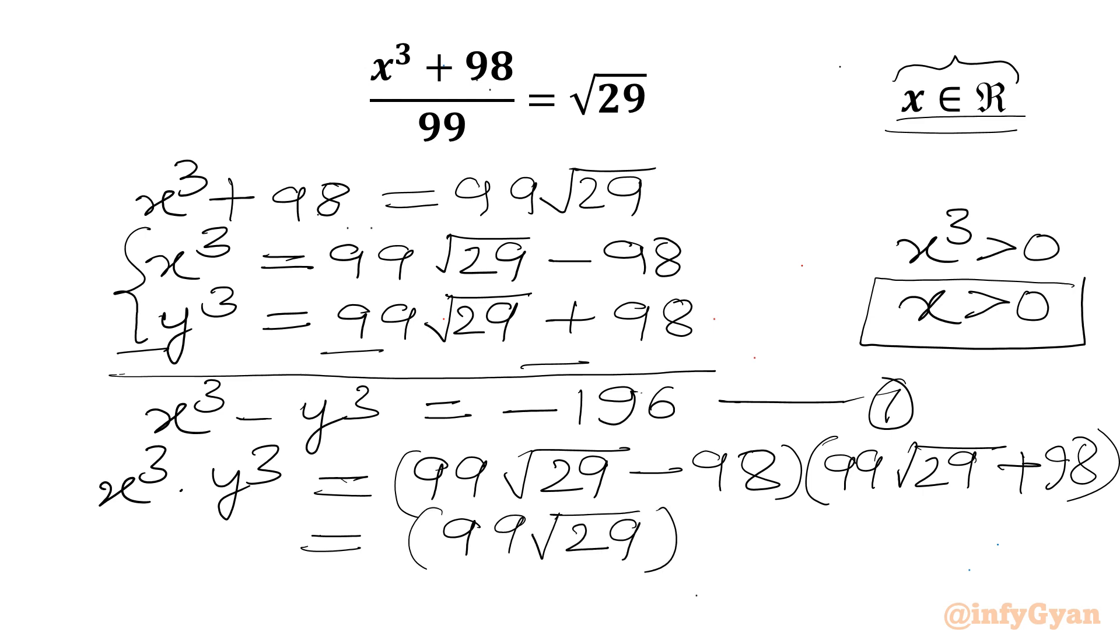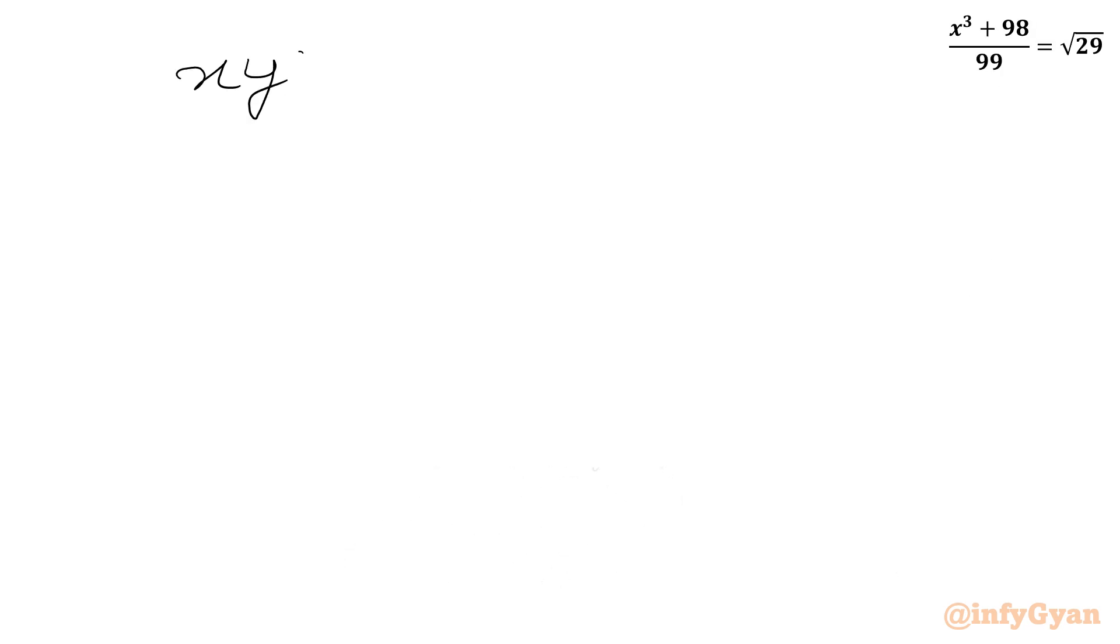Using the formula a minus b times a plus b equals a squared minus b squared, we get 99 squared times 29 minus 98 squared.